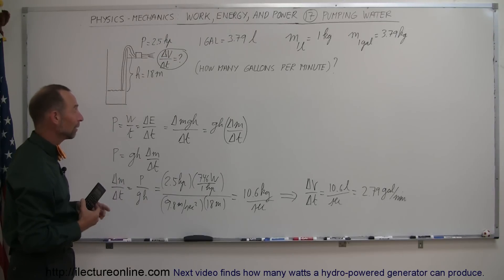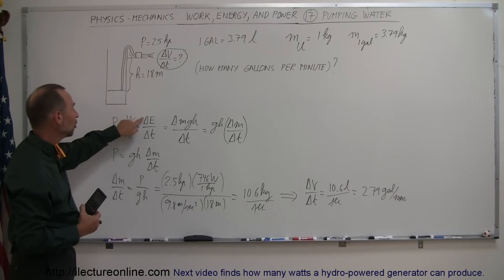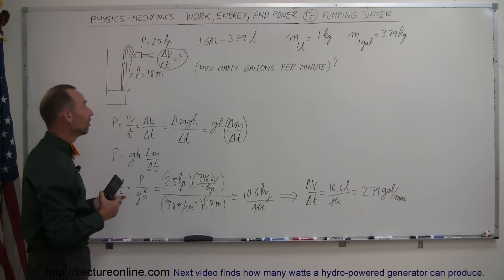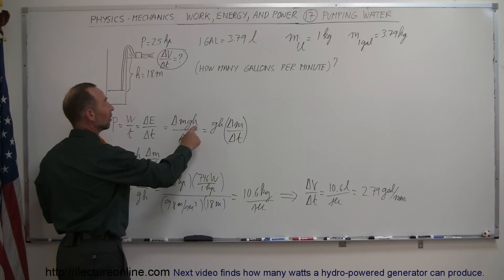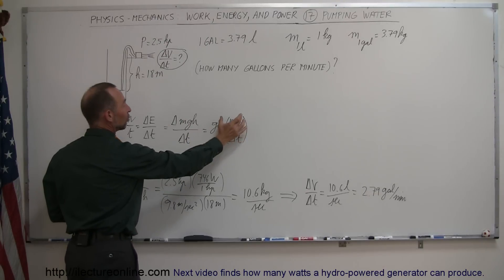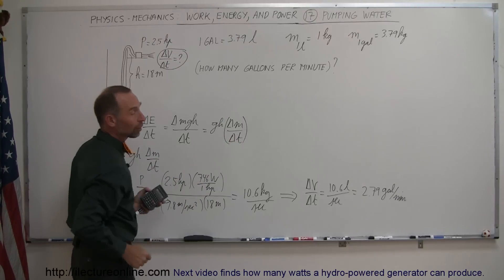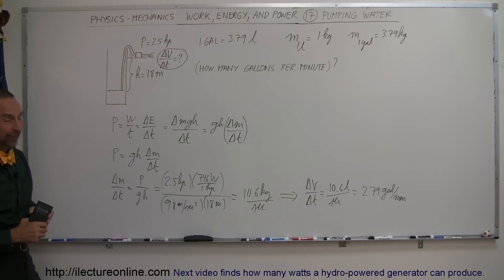And so that's how you would do that. Use the very same principle, starting with the definition of power equals work over time, or the change in energy over time. And in this case, since the height was a constant, we pulled that out, and we just had it in terms of delta M delta T, which is what we're looking for. And that's how you do that problem. Great.